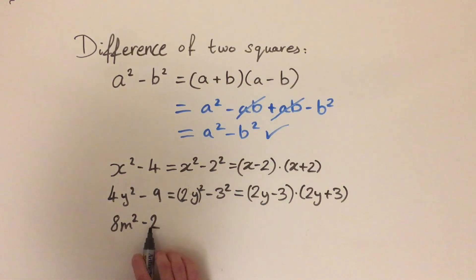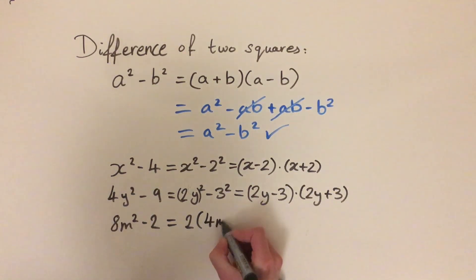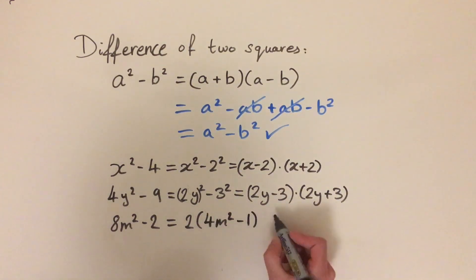So what we're going to need to do is we have to see that both terms are actually even. So we can factorize out a 2. So if we do this, we have 2 times and we factor out a 2 from 8. So that's the same as dividing 8 by 2. So we're going to have 2 times 4m squared. The m doesn't change. And if we divide 2 from 2, we're going to get left with 1. So minus 1.